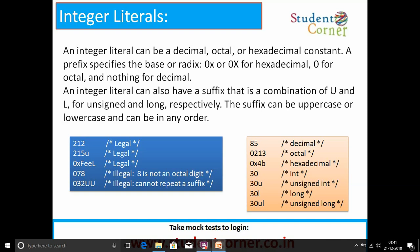The suffix can be uppercase or lowercase and can be in any order. Examples include: 212, 215u, 0xFEL are legal. Some examples are illegal, such as: 078 (8 is not an octal digit), 032UU (cannot repeat a suffix). The suffixes mean: decimal for decimal, L means long, UL means unsigned long.